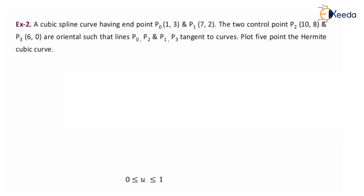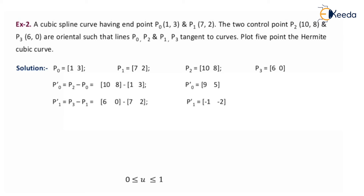Second problem: a cubic spline curve has end points P0 at (1, 3) and P1 at (7, 2). Two control points P2 at (10, 8) and P3 at (6, 0) are oriented such that the lines P0-P2 and P1-P3 are tangent to the curve. Plot five points on the Hermite cubic curve.